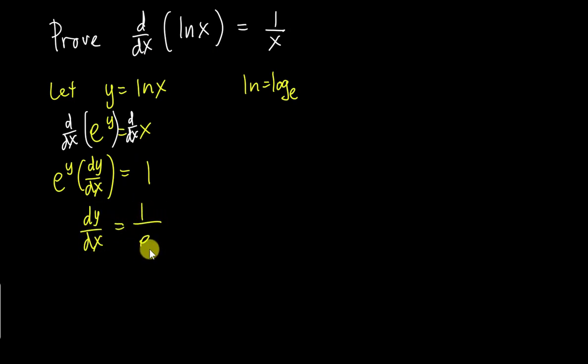Right now we want to find dy/dx, so dy/dx is 1 over e^y. But we want it in terms of x, not y, so we need to know what is y. Our y is ln(x), so I will change it to become 1 over e^(ln x).